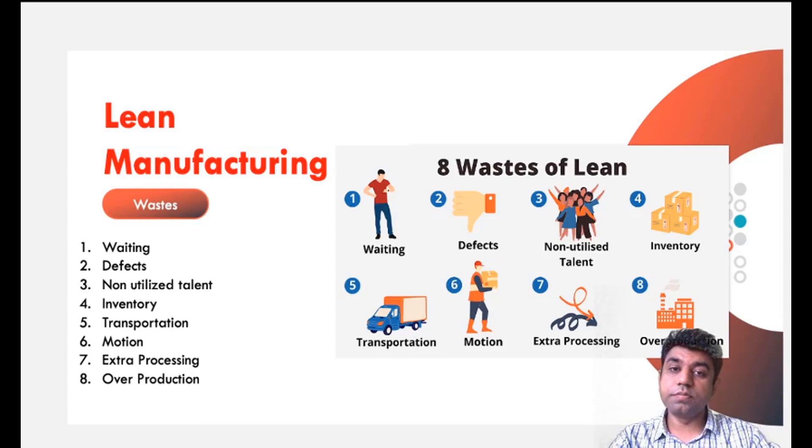If you are polishing some of the product more than the customer requirement, then that is also of no use. Ultimately you are wasting the resources and the energy. Eighth, that is overproduction. Produce as per the requirement only. Don't go for the overproduction, otherwise it will add on the inventory. You need to eliminate these different eight wastes which are present in most of the industry. If you do that thing properly, you can have the lean manufacturing concept.